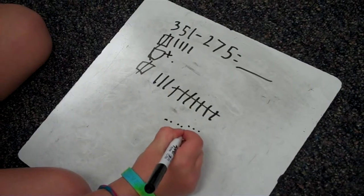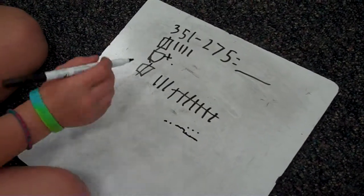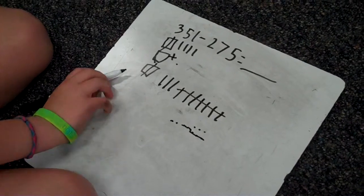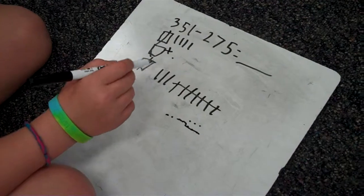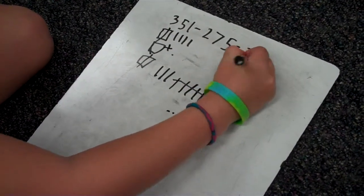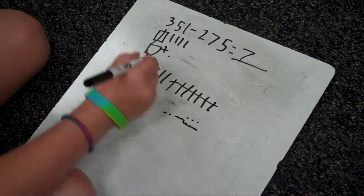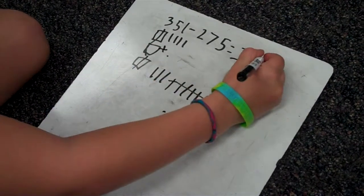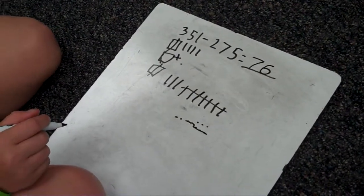And then, so that's zero hundreds blocks. Seven tens blocks. So that's 70, and then six ones blocks, and then that's 76. That's perfect.